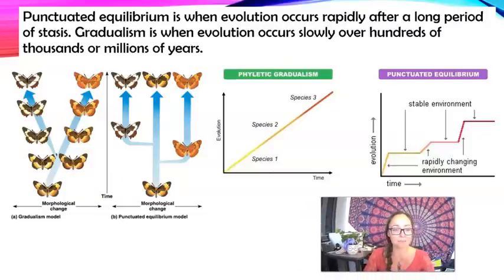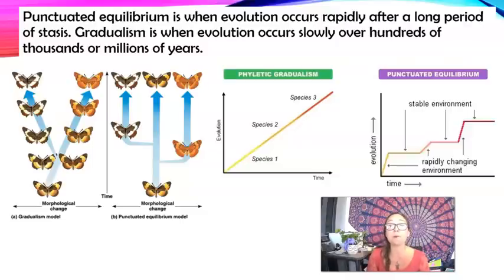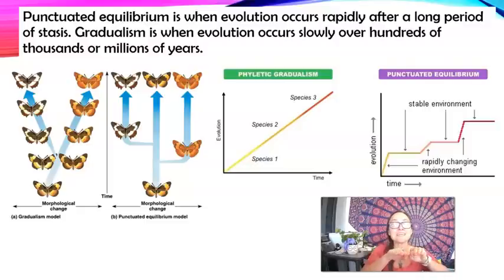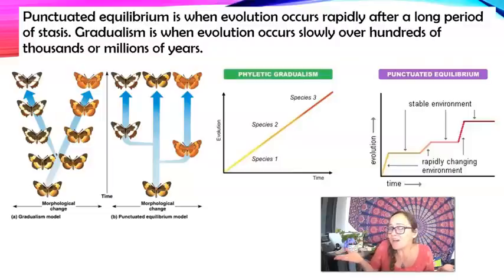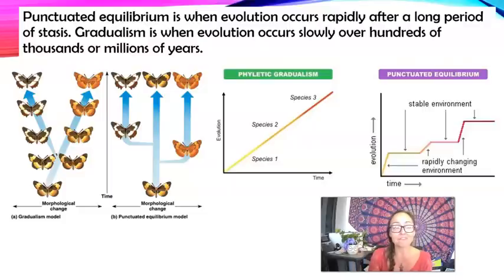When talking about evolution, we have gradualism — gradual changes over time through natural selection — and punctuated equilibrium. In punctuated equilibrium, there are long periods of stasis where things are stable and there's little ecological stress. Then in times of ecological stress like climate change, there's environmental pressure selecting for different phenotypes, potentially causing rapid evolution. But 'rapid' could mean 5,000 years — rapid relative to Earth's 4.6 billion year history.